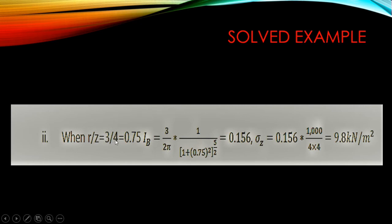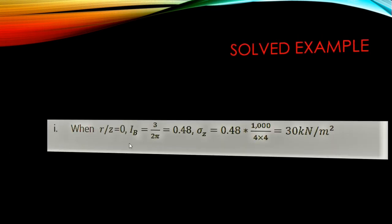r over c equals 3 over 4, which is 0.75. So we compute: (3/2π) multiplied by 1 divided by [1 + (0.75)²] raised to the power of five over two. This gives Ib = 0.156.